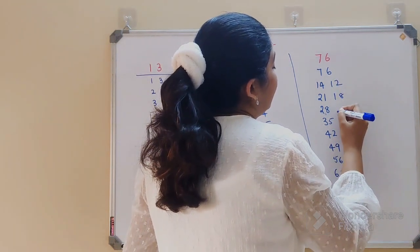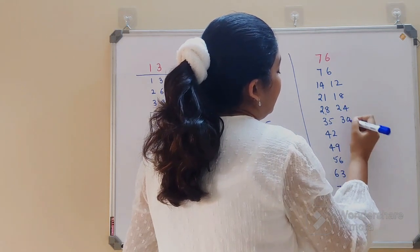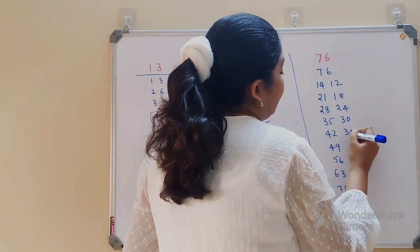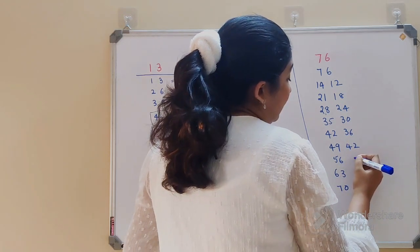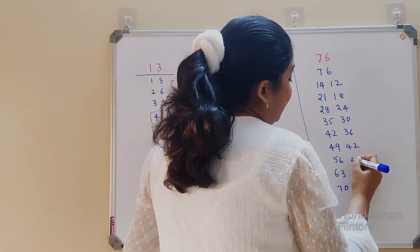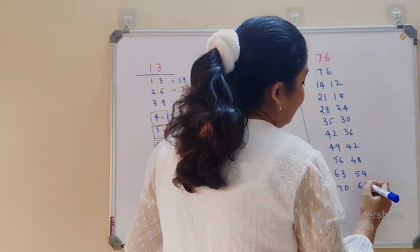Now again 6's table: 6 ones are 6, 6 twos are 12, 6 threes are 18, 6 fours are 24, 6 fives are 30, 6 sixes are 36, 6 sevens are 42, 6 eights are 48, 6 nines are 54, and 6 tens are 60.